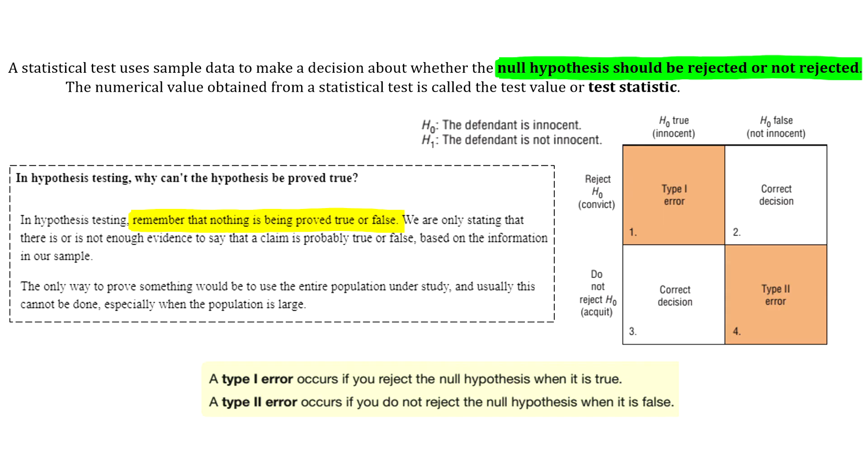Basically, you have a defendant on trial, and the null hypothesis is that the defendant is innocent, and the alternative is that they are not innocent or, in other words, guilty. The prosecutor will present the evidence in court, and based on that evidence, the jury will decide to either convict or acquit the defendant. Let's run through the possible outcomes.